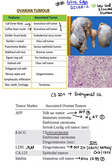Coming on to the Schiller-Duval body, which is seen in endodermal sinus tumor, also known as yolk sac tumor. To remember it, use the mnemonic YES: Y is for yolk sac, E is for endodermal sinus tumor, and S is for Schiller-Duval body, which is also known as glomeruloid body.